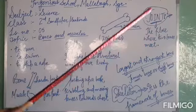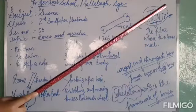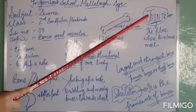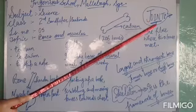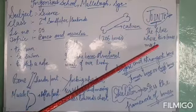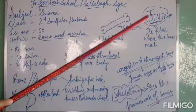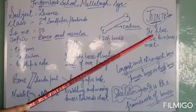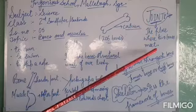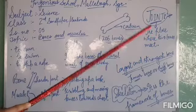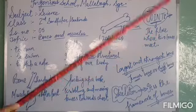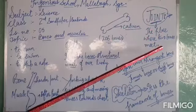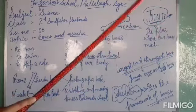You can see a joint between your upper arm and your lower arm. You can also see a joint between your thigh and your lower leg, and a joint between your hip and your thigh. These are all called the joints of our body.